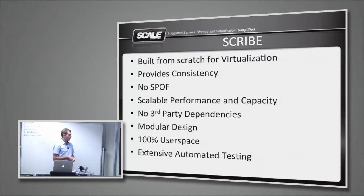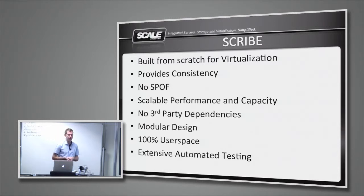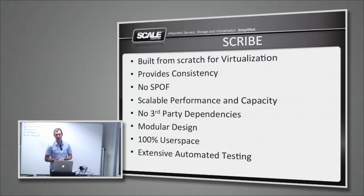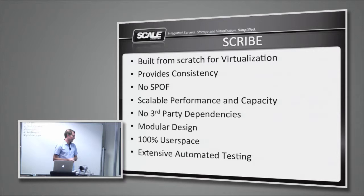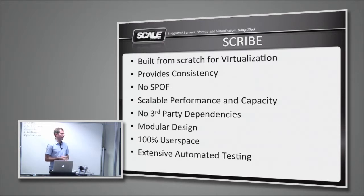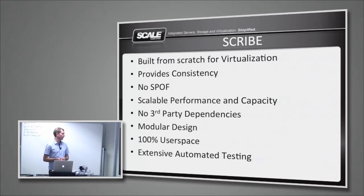We have no third-party dependencies. This is not a mishmash of open source technologies pieced together — Scribe was developed entirely in-house. It's a modular design, as you'll see, with many components that are very easy to change out. Different components can run side-by-side in different configurations, which turns out to be very useful. It's also 100% user space — we're not interested in providing proprietary kernel modules to people who want to run a stock, stable Linux kernel. Lastly, we do extensive automated testing on Scribe. Every code commit has to have tests along with it, and code reviews will fail if you don't have tests with your commit.